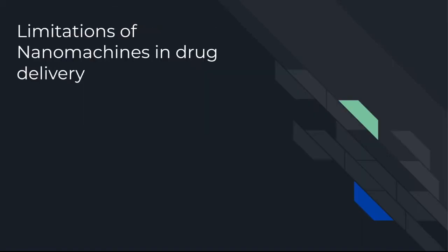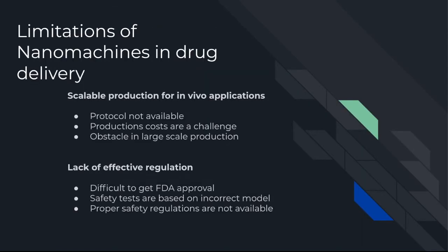There are a few significant limitations that are stopping the widespread use of nanomachines in drug delivery. Standardized protocols are not available for nanomachines, which will delay the transition from in vitro to in vivo application. This transition is looking very promising in research, but the challenge lies in the technology being used on a larger scale. Nanomachines will require regulatory approval before being used in clinical trials or reaching the drug delivery market.